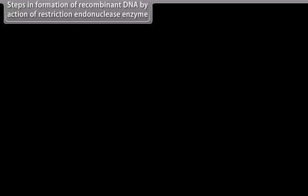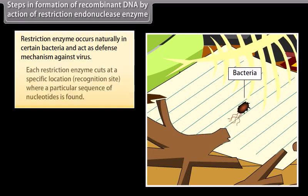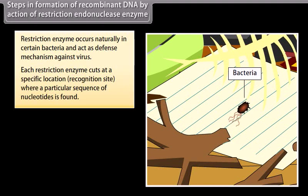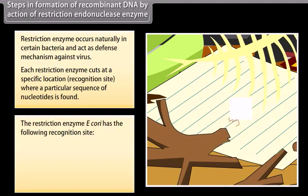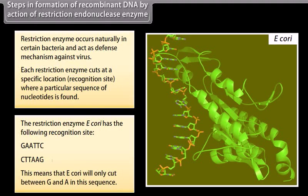Steps in formation of recombinant DNA by action of restriction endonuclease enzyme. Restriction enzymes occur naturally in certain bacteria and act as a defense mechanism against viruses. Each restriction enzyme cuts at a specific location, called a recognition site, where a particular sequence of nucleotides is found. The restriction enzyme EcoRI has the following recognition site: 5' G-A-A-T-T-C 3' and 3' C-T-T-A-A-G 5'. This means that EcoRI will only cut between G and A in this sequence.